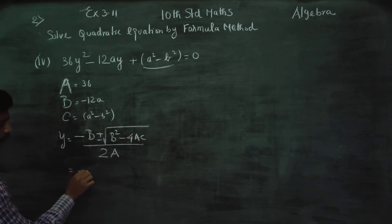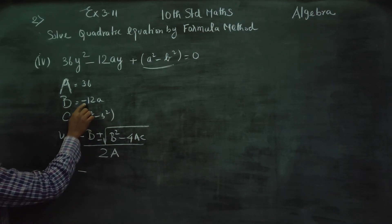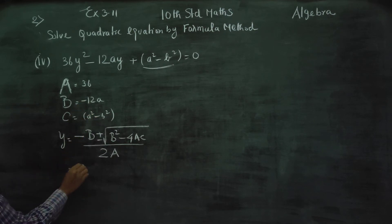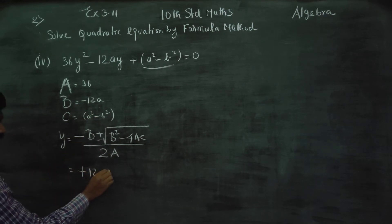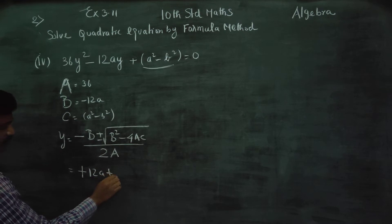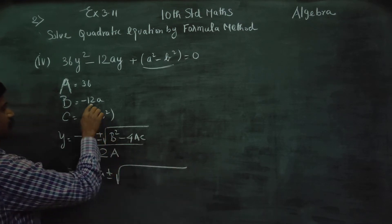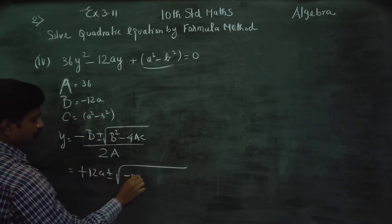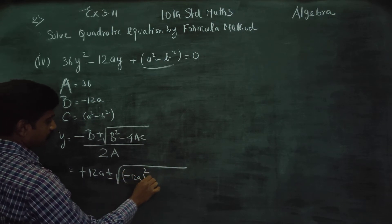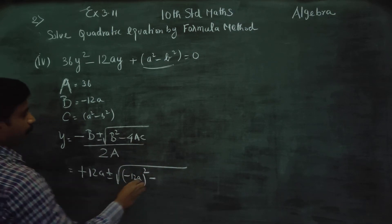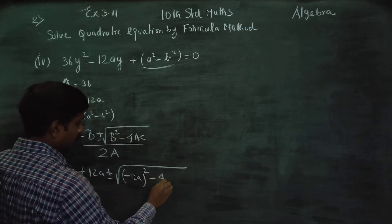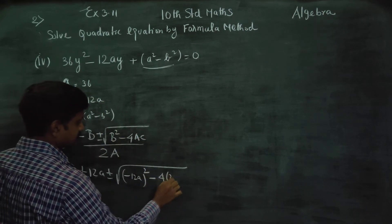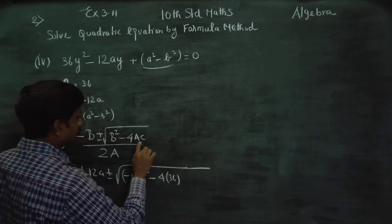Is equal to minus B. B is minus 12A, so minus of minus 12A gives us plus 12A, plus or minus square root of B squared, which is minus 12A whole squared, minus 4AC.